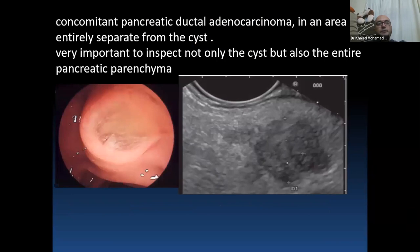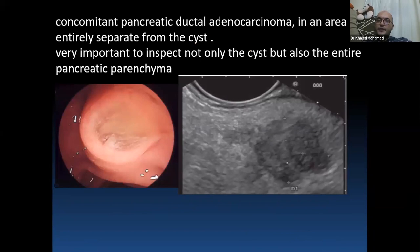A concomitant pancreatic duct adenocarcinoma may occur in an area completely separate from the IPMN cystic lesion, so it is important to inspect not only the cystic region but also all of the pancreatic parenchyma. IPMN has the characteristic fish mouth or fish eye appearance with flushing of mucoid secretion from the papilla, as seen in typical main duct IPMN images.